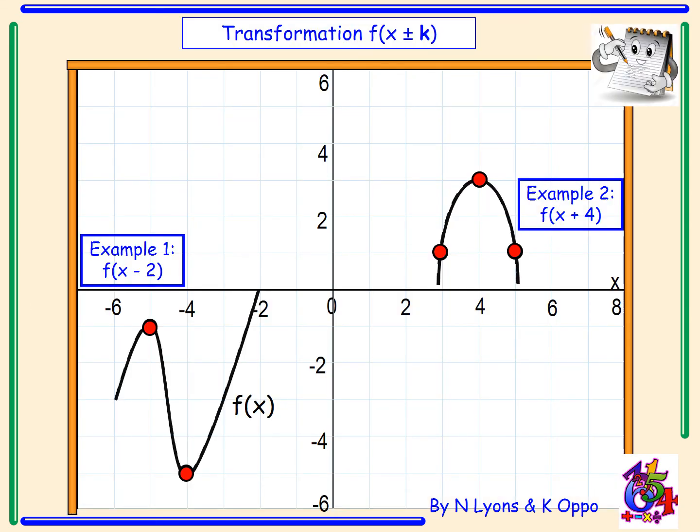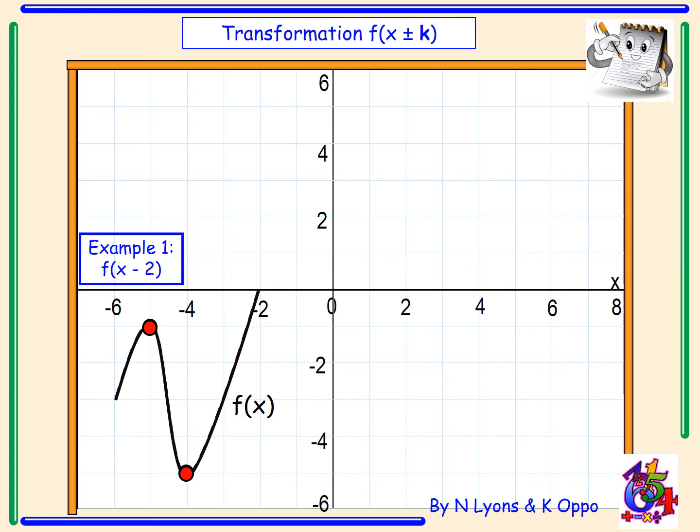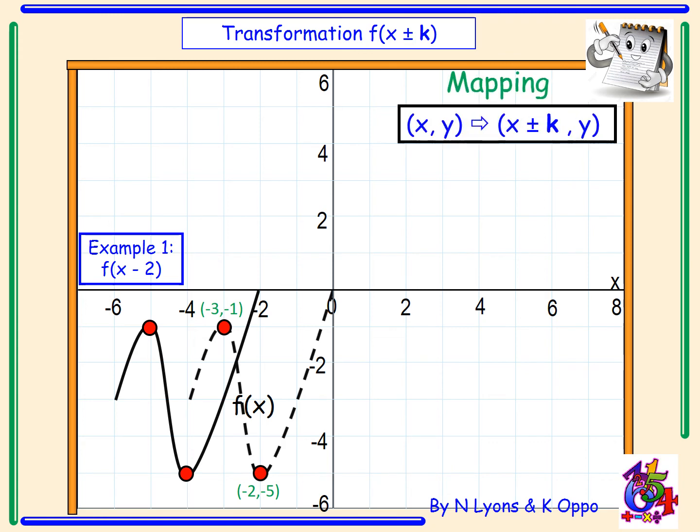Here we've got some examples. Firstly, example one: we have to draw the graph of f(x - 2). So if it's negative, we are going to move the graph horizontally to the right by two places. Our two new coordinate points become (-3, -1) and (-2, -5). Again, it's the same shape when we are moving the graph horizontally. So the mapping, what we need to do is add or subtract k to our x-coordinates.